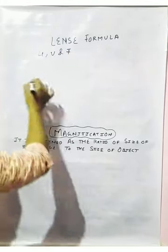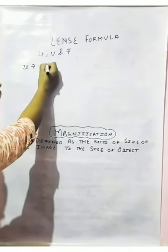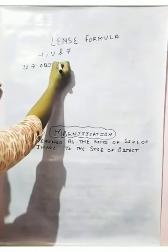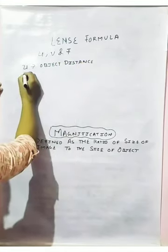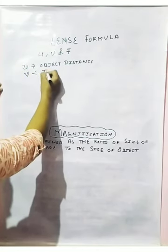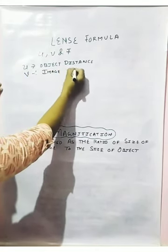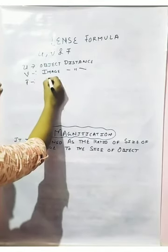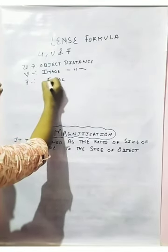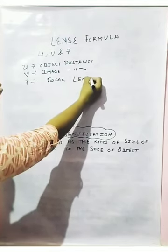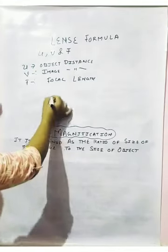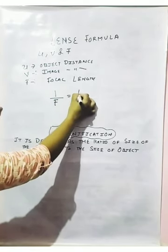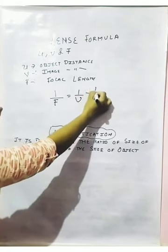What is U, V, and F? U means object distance, V means image distance, and F is nothing but the focal length. So the lens formula says that 1 upon F is equals to 1 upon V minus 1 upon U.